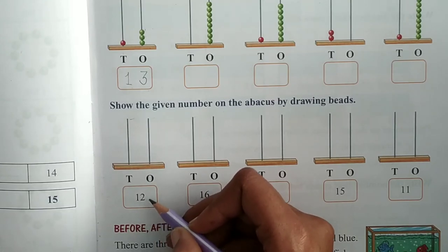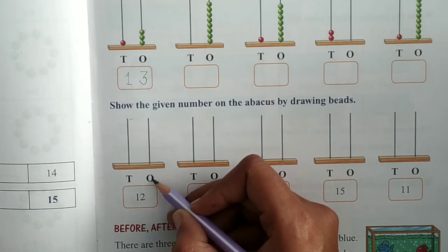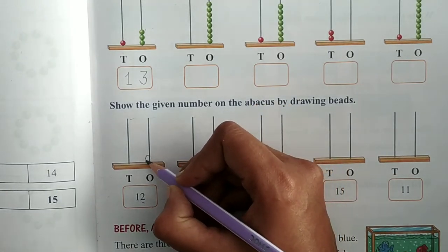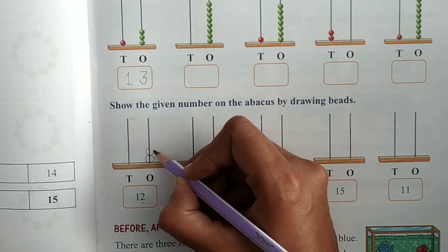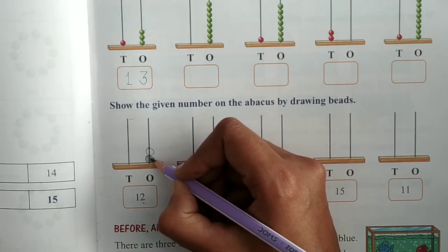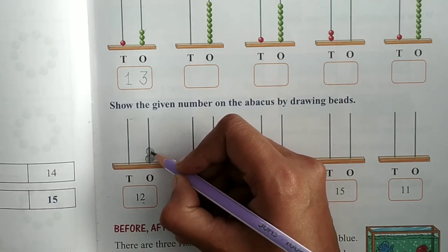So now just see. Here is one, two, twelve. What is at ones place? On one place it is two. So I will make two beads on my ones place. You can color it also, but very lightly. It must be neat and clean.